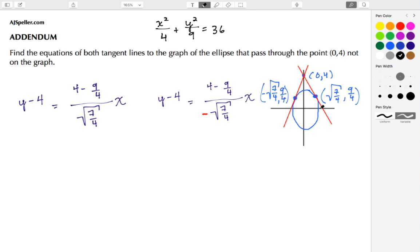We have the two tangent lines, we have the points of tangency, and we see that the tangent line is going through that point of tangency and the point (0,4). Now let's go ahead and simplify each one of these equations.